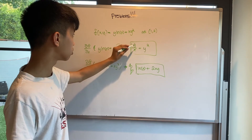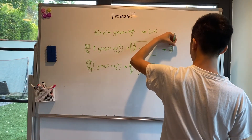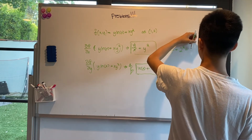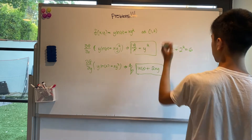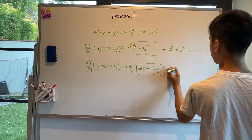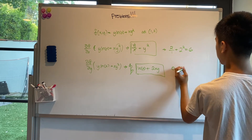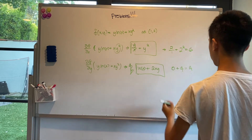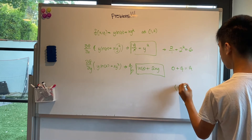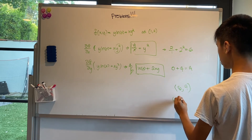Now we start plugging everything in. 2 goes into y and 1 goes into x. So 2/1 + 2² = 6. And 1 goes into x, so ln(1) + 4 = 0 + 4 = 4. Therefore, the gradient of our function is (6, 4), or 6i + 4j.